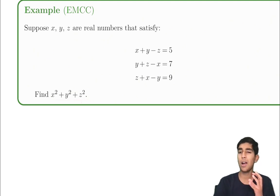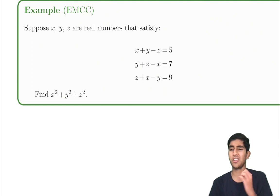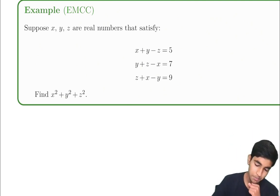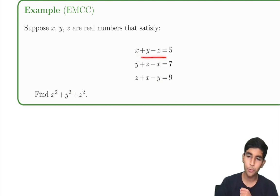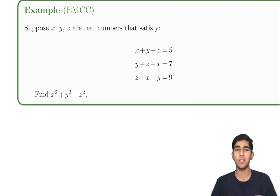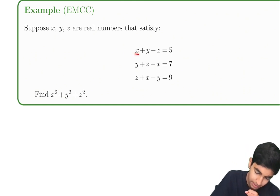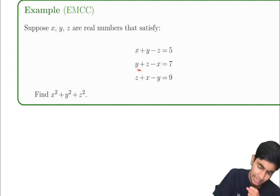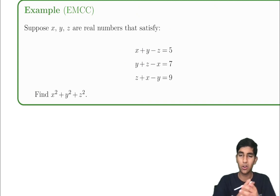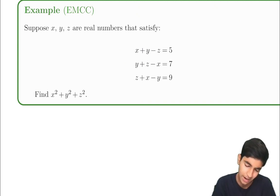Interesting. So you could go about substitution, elimination, whatever — but is there anything else we can do here? The key idea is to notice that all three equations look very, very similar. x plus y minus z. y plus z minus x. z plus x minus y. It's like they're all the same equation with the different variables shifted.